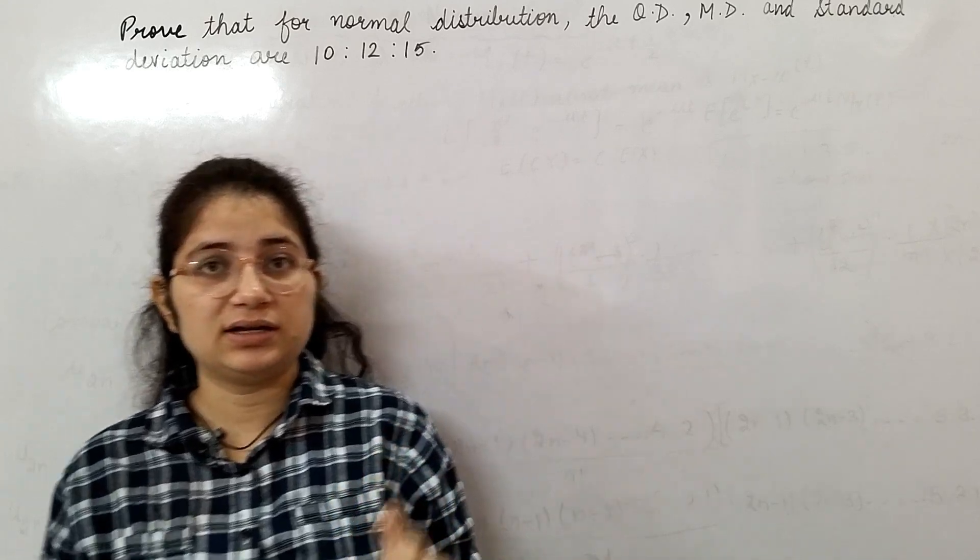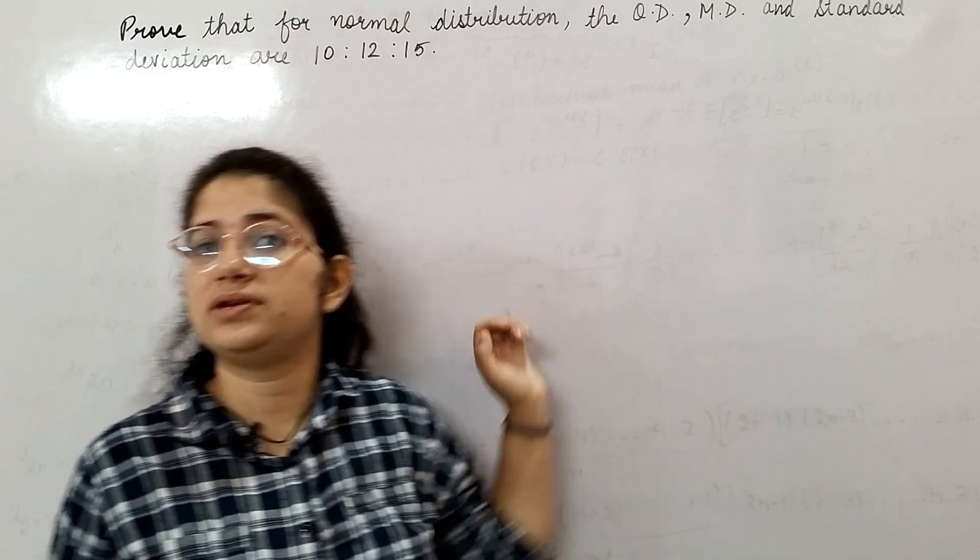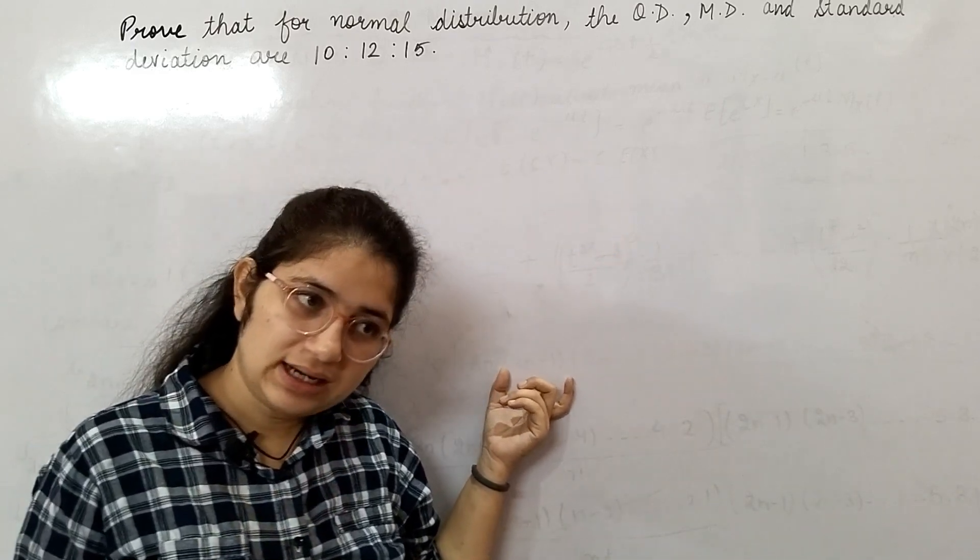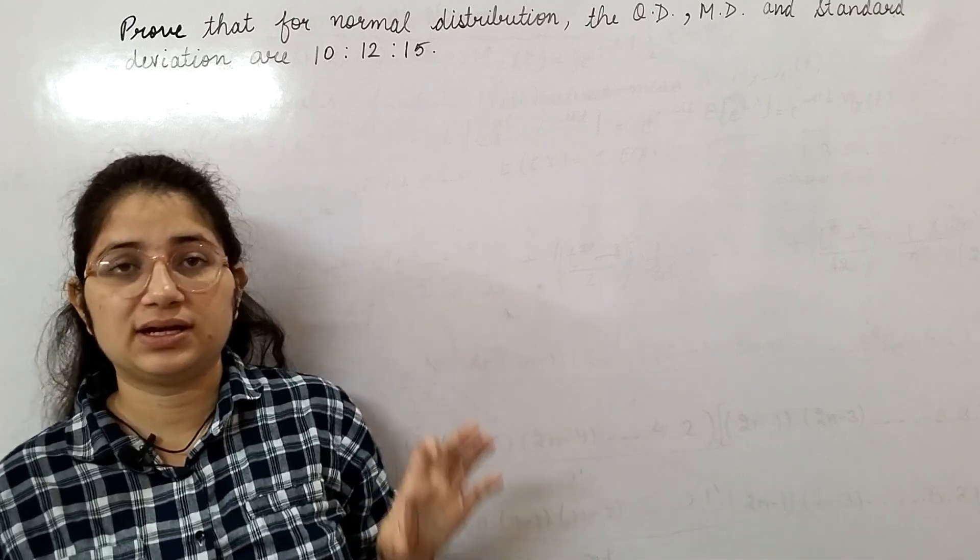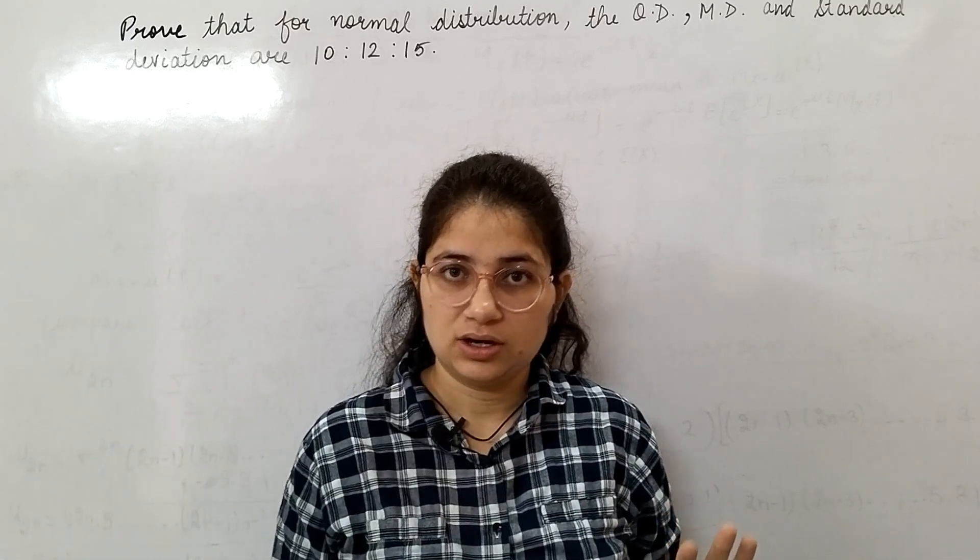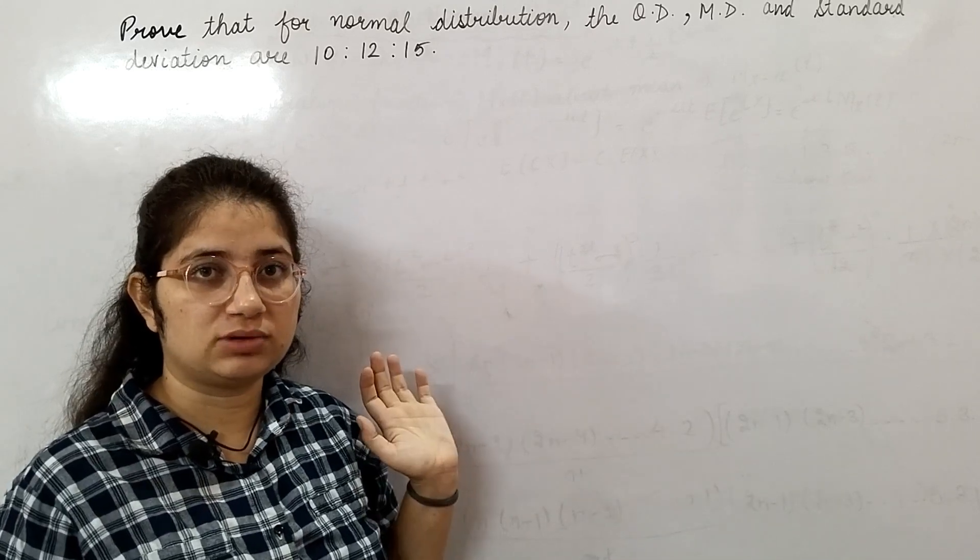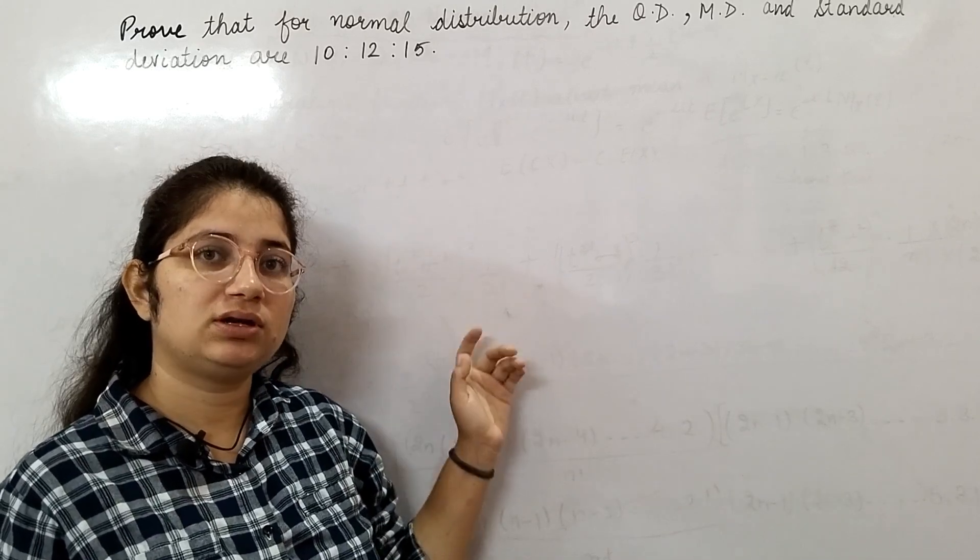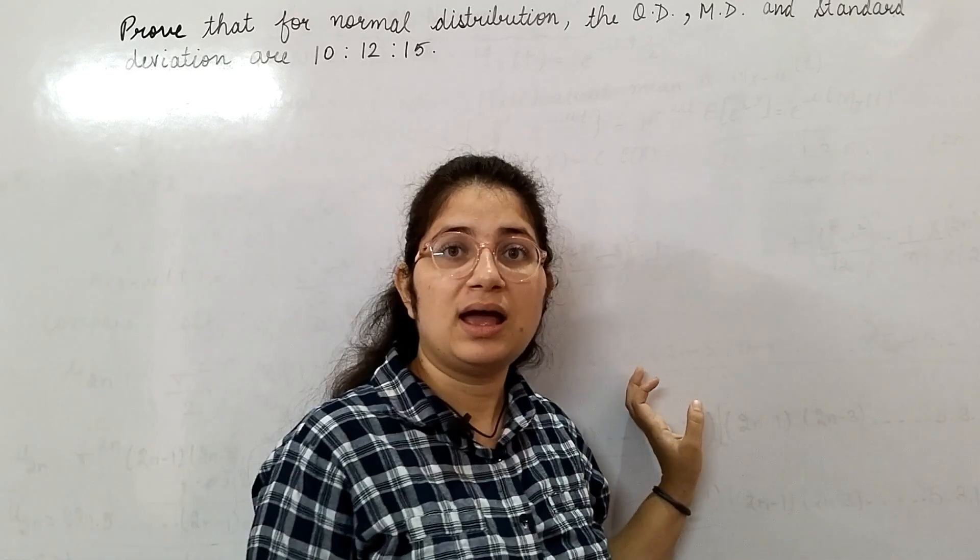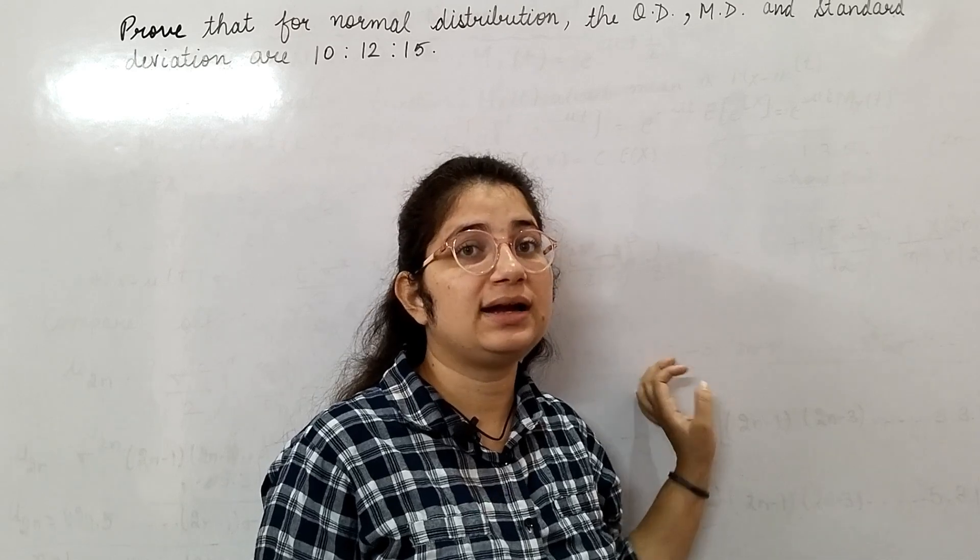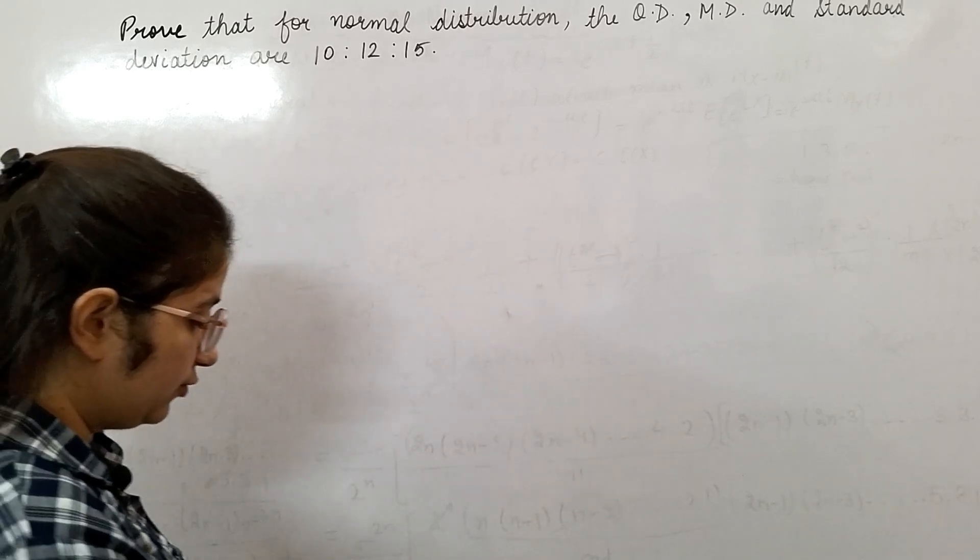Now, what is quartile deviation? In quartile deviation, these quartiles divide your set of data into four equal sets. The q2 quartile is your median quartile. Here I will use q1 and q3 quartiles for the proof.